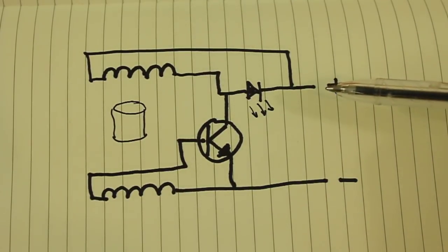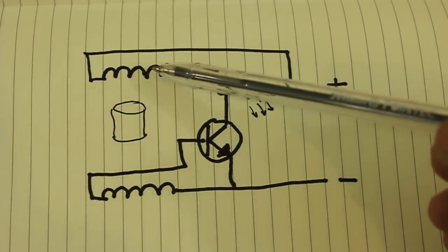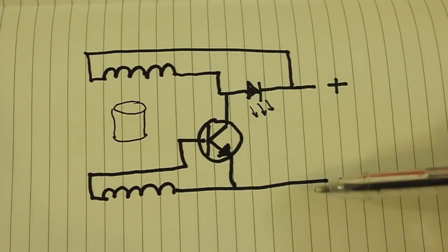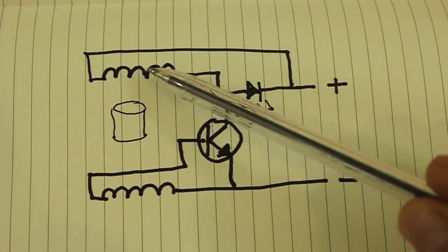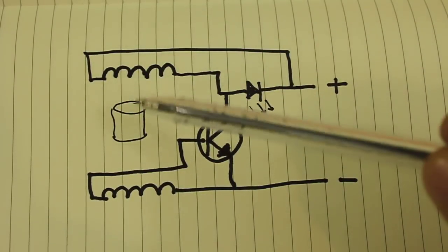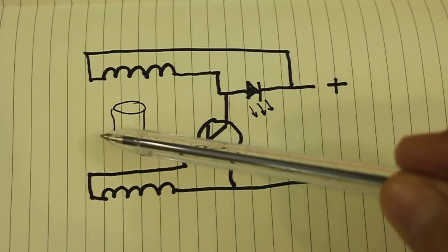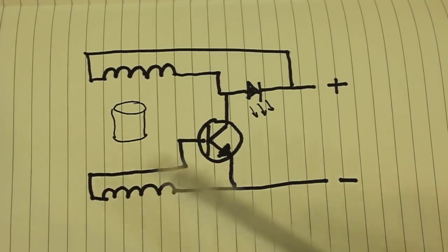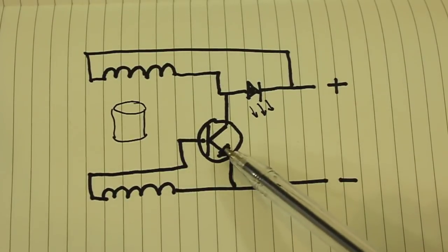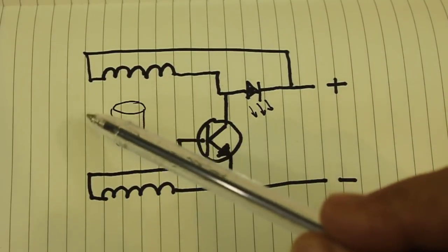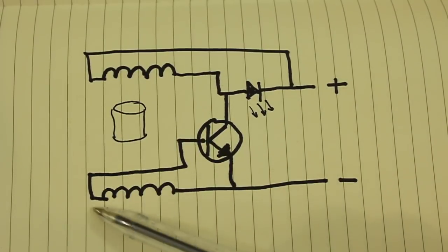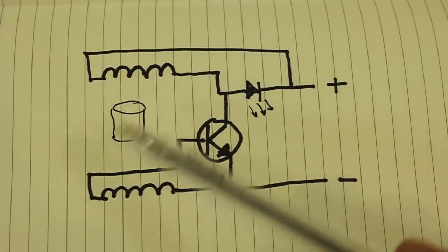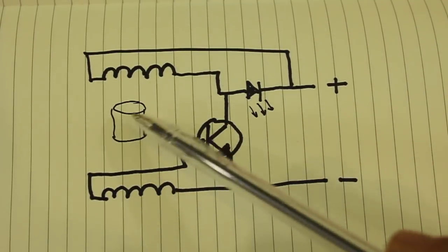So the current from the power supply goes to the upper coil through the transistor and then to ground. So this coil produces a magnetic field that pushes the magnet and makes it turn. Then the coil below deactivates and the transistor turns off until the magnet turns again and activates the coil below again. And the cycle repeats with every turn of the magnet.